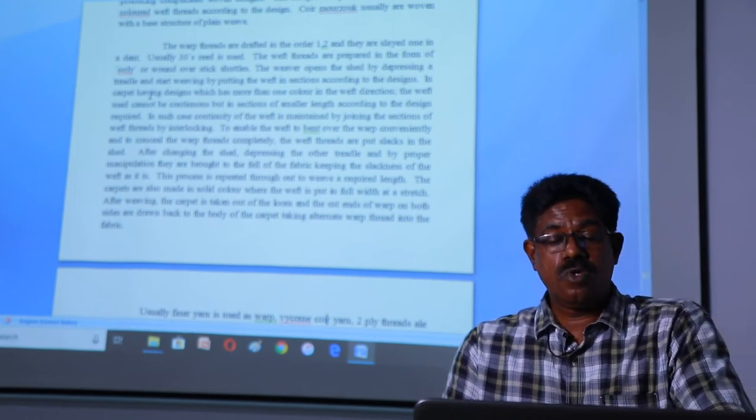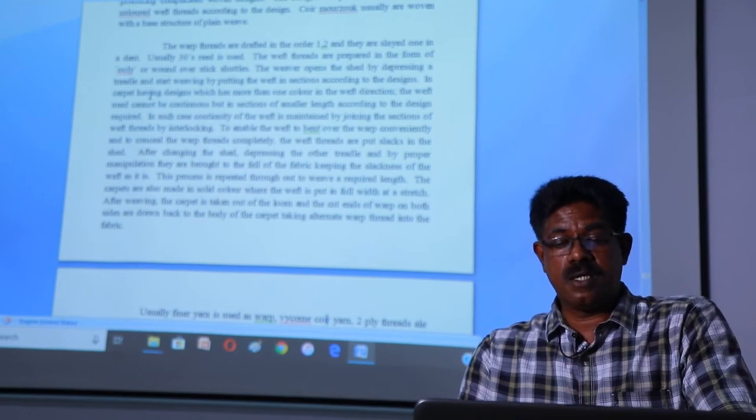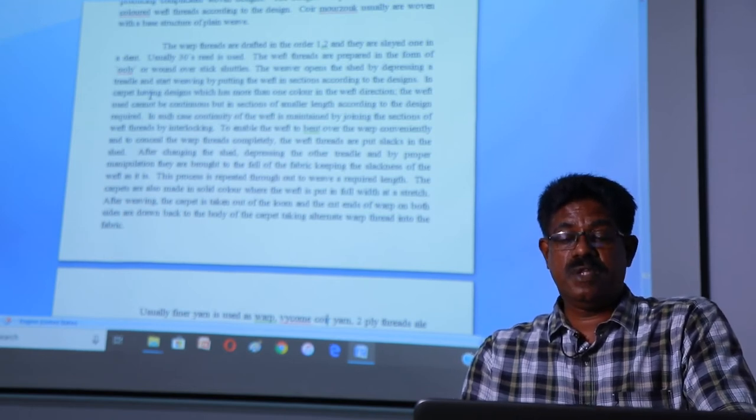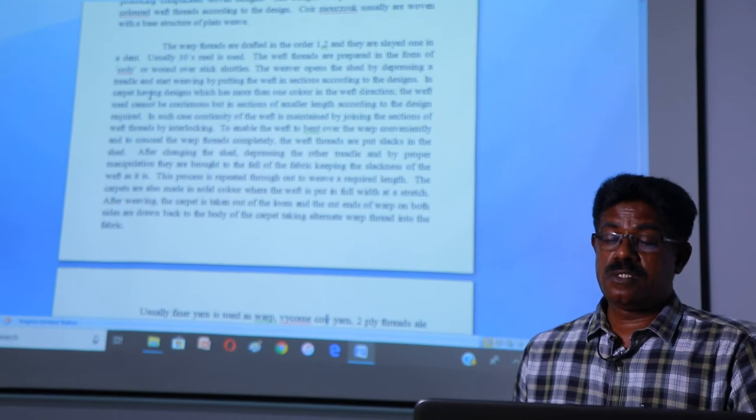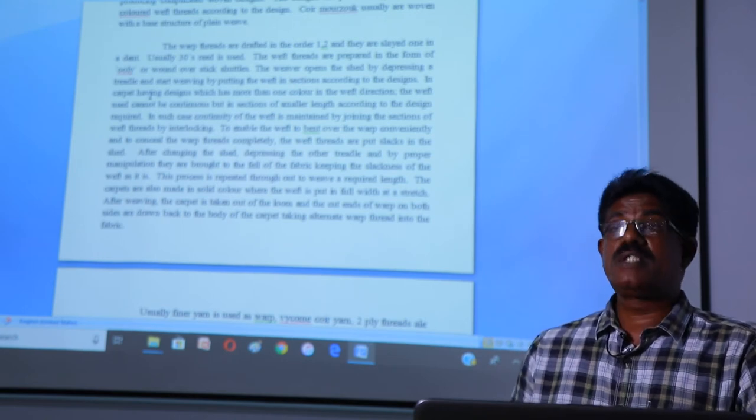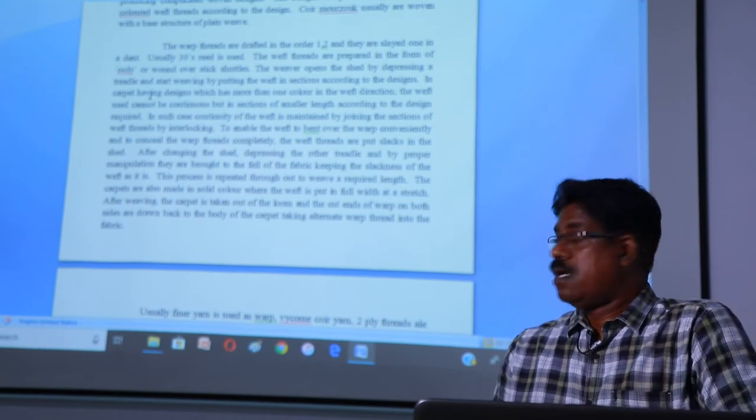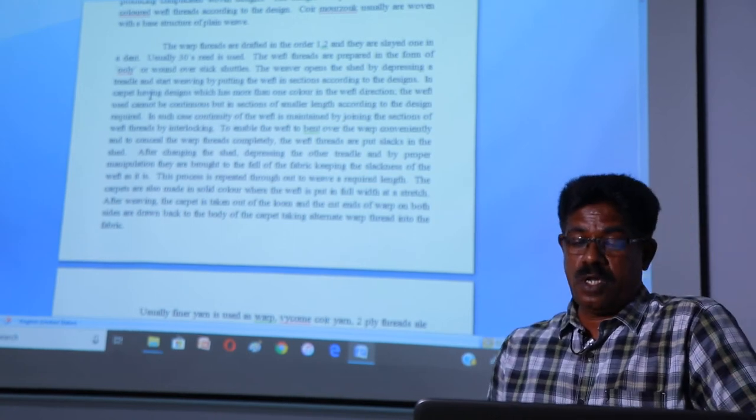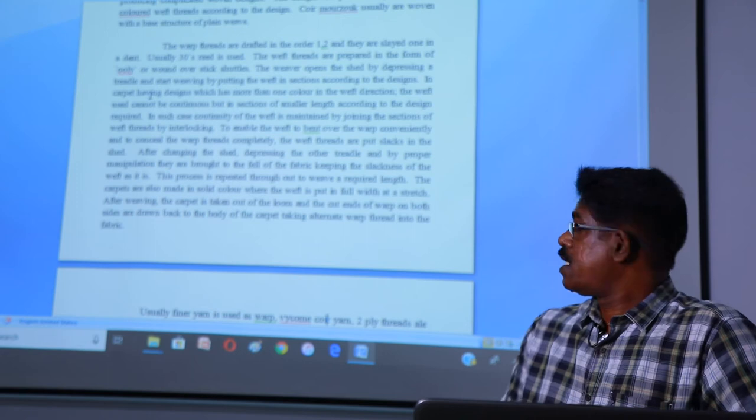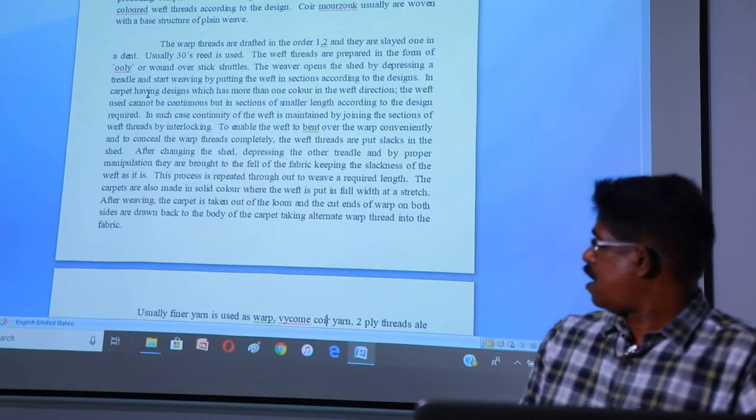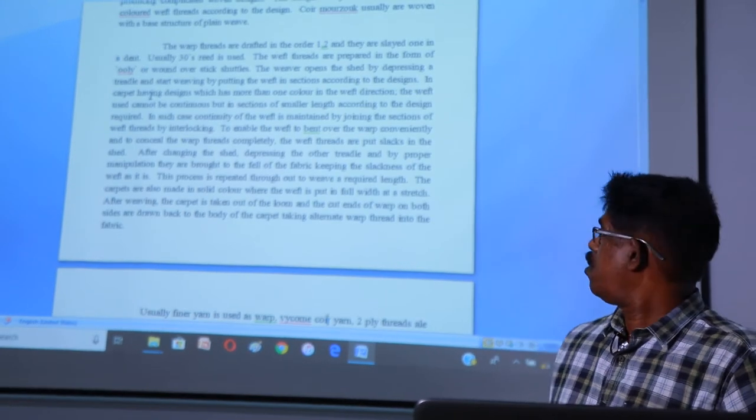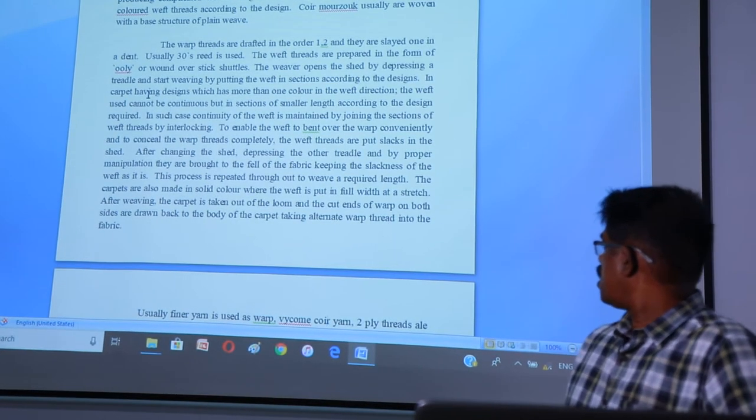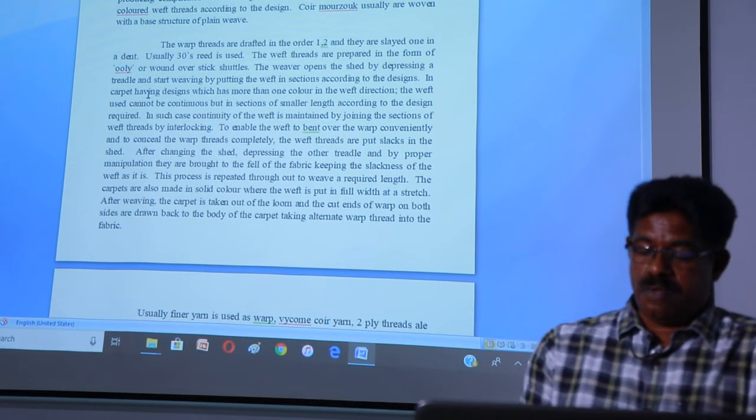The carpets are also made in solid color where the weft is put in full width at a stretch. After weaving, the carpet is taken out of the loom and cut ends of the warp on both sides are drawn back to the body of the carpet, taking alternate warp threads into the fabric.